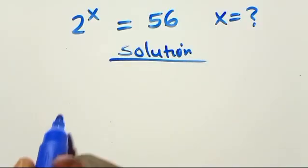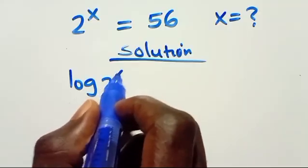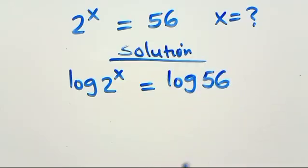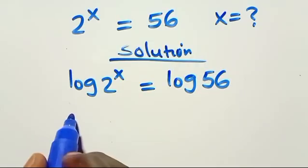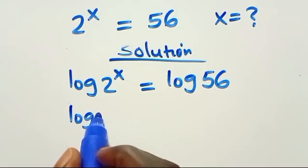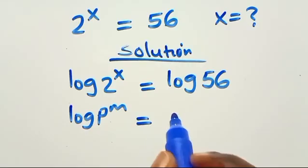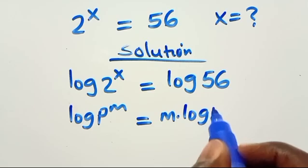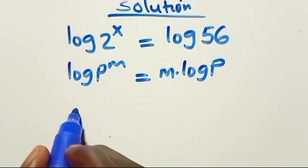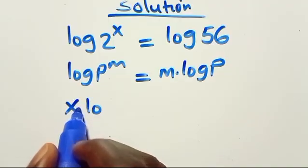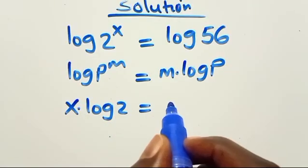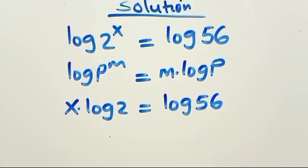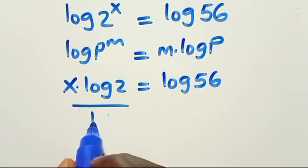So let's introduce log to both sides: log of 2 to the power of x equals log 56. We recall that log p to the power of m equals m multiplied by log p. So here we have x times log 2 equals log 56. Let's divide both sides by log 2.